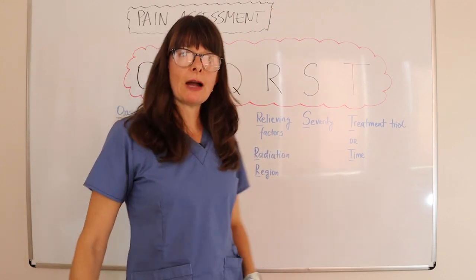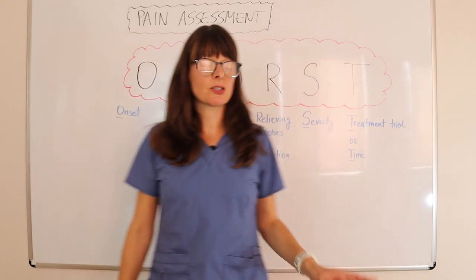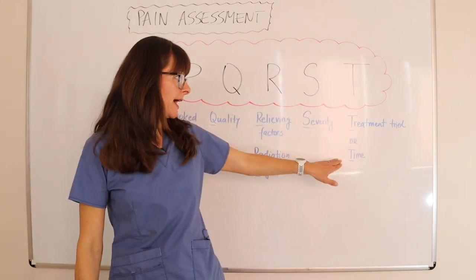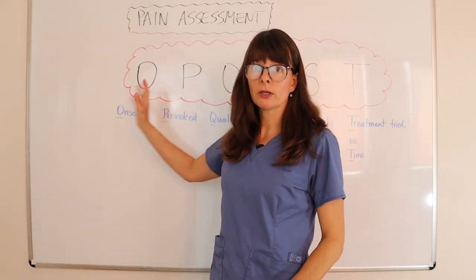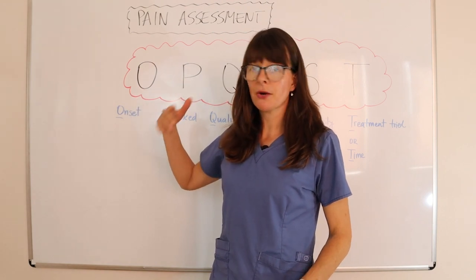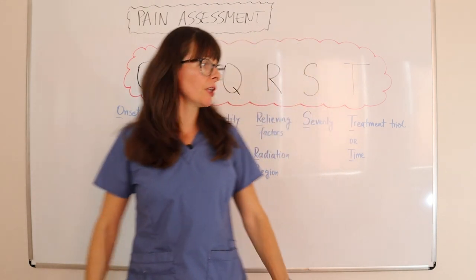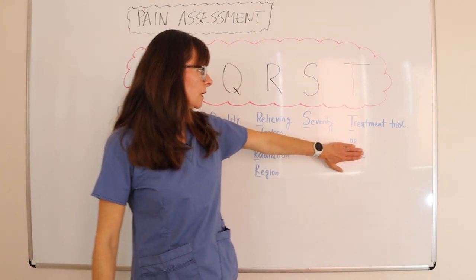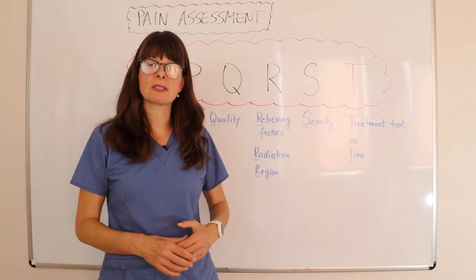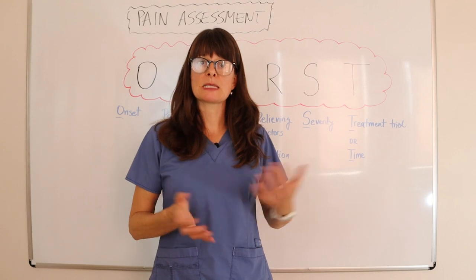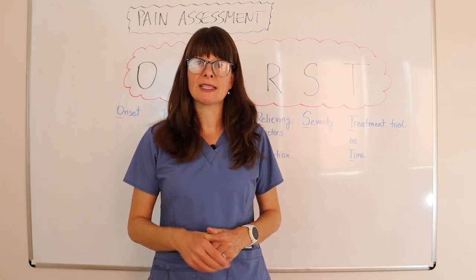If you leave out the O for onset, then you should address T for time. But if you include the O in the full OPQRST acronym, then onset is already covered and you can leave out time, since the acronym already encompasses all the aspects needed for a thorough pain assessment.